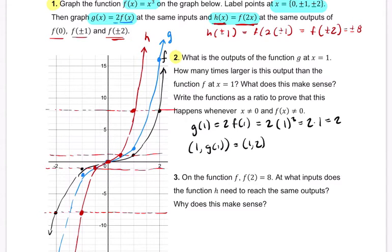How many times larger is this output than the function f at x equals 1? Well, f of 1 is just 1 cubed or 1. So when we compare the outputs here, we've got 2, which is in this point here, and 1, it's twice as big or twice as large. So we say twice as large.